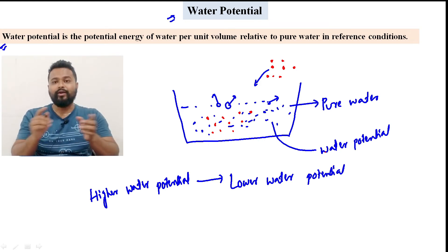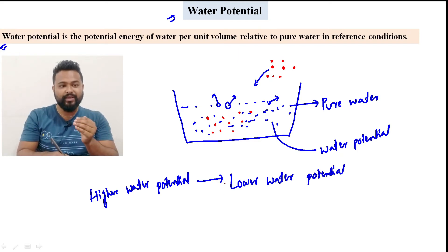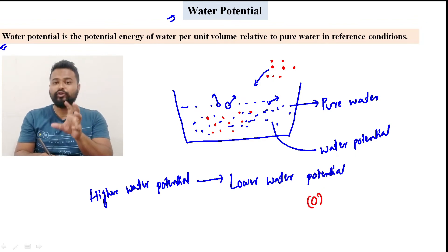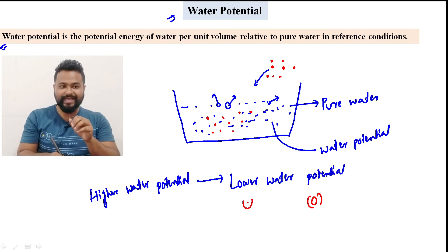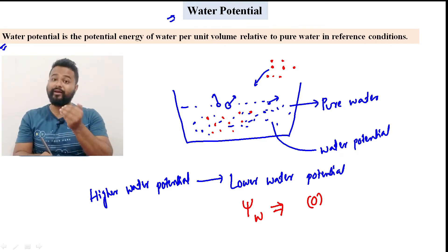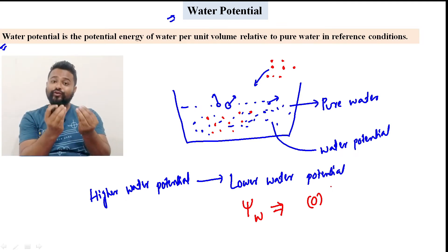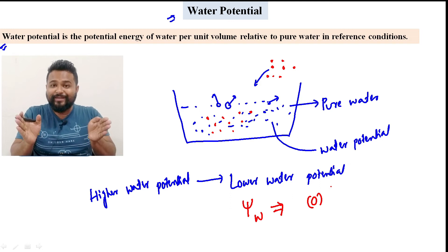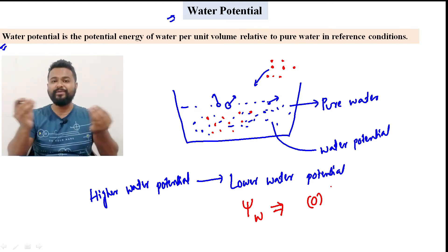The maximum water potential you can denote with the symbol ψw. Pure water has the maximum water potential, and by convention, pure water is assigned a value of 0.